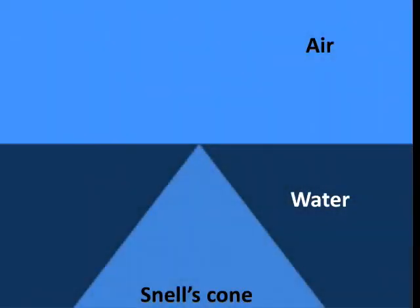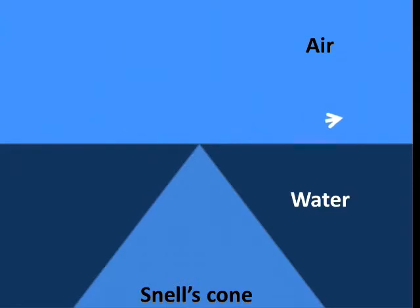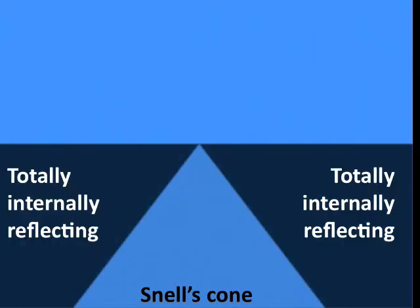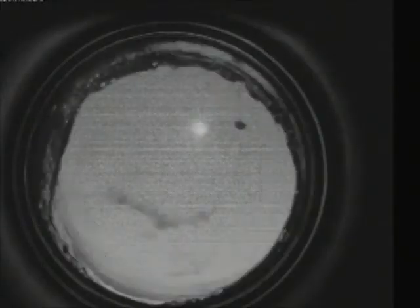One of the important concepts in ocean optics is Snell's cone. Light travelling from the atmosphere going straight down will continue straight down, but light coming from the horizon gets bent at an angle near 45 degrees, so instead of going sideways it travels more downward. This means there's a section of the ocean not lit by the atmosphere — an area called totally internally reflecting because it's only lit from the light below. An underwater robot shows the sky shrinking into Snell's cone as it dives, and the vehicle itself is visible because the ocean surface acts as a mirror.